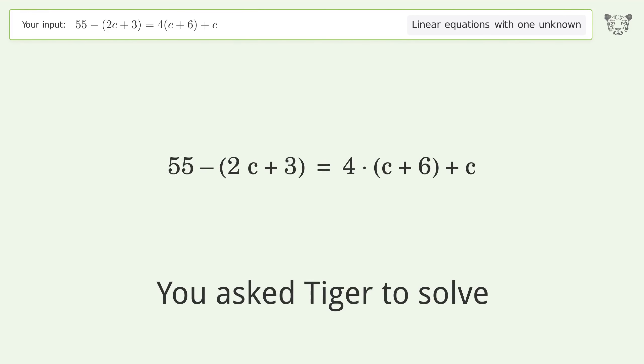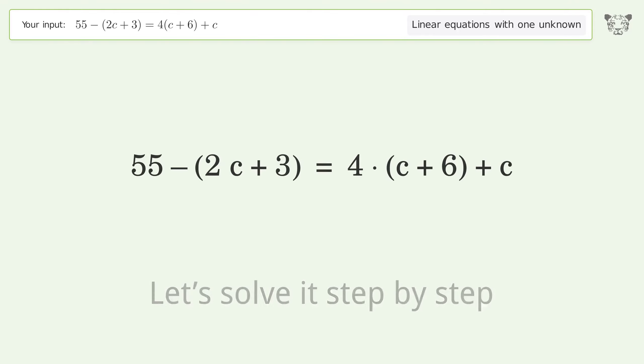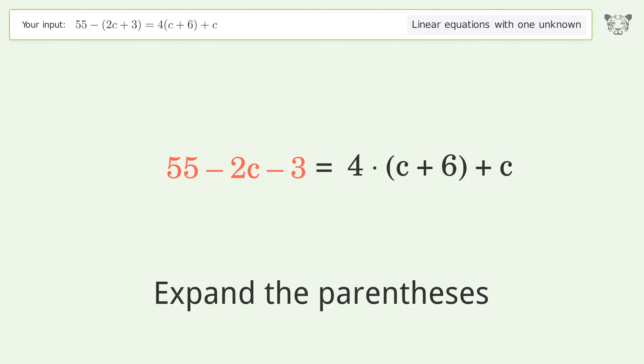You ask Tiger to solve this. It deals with linear equations with one unknown. The final result is c equals 4. Let's solve it step by step: simplify the expression, expand the parentheses, group like terms.